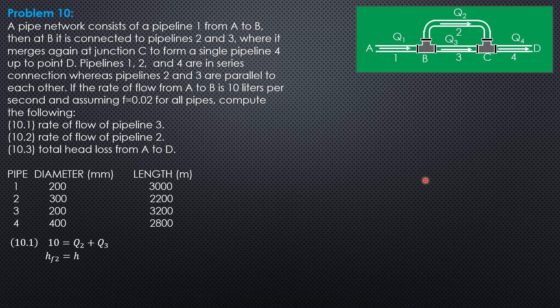And common to the formula is 0.0826 and friction factor 0.02. So, it should be length of pipe 2, 2,200 Q2 squared over 0.3 to the 5th equals length of pipe 3, 3,200 Q3 squared over diameter 0.2 to the 5th.